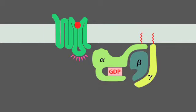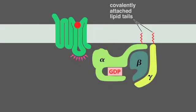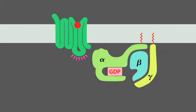Both the alpha and gamma subunits have covalently attached lipid tails that help anchor the G-protein in the plasma membrane. In the absence of a signal, the alpha subunit has GDP bound, and the G-protein is inactive.